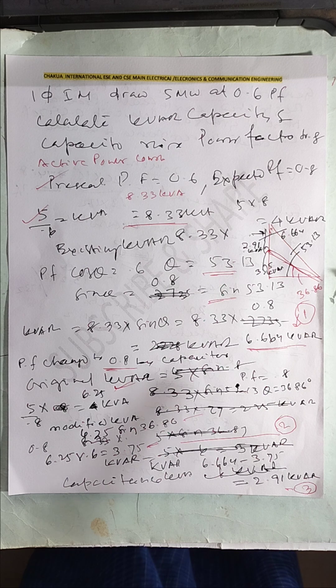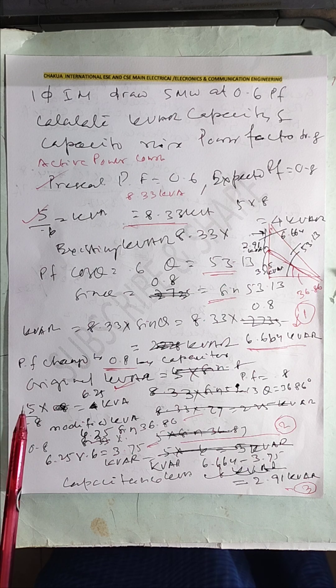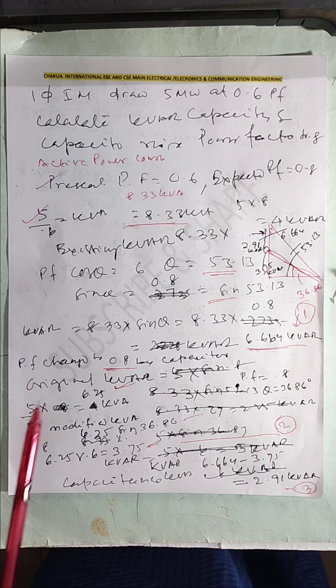First, for the 5 kW at 0.6 power factor, it is 8.33 kVA. The angle is 0.6, angle 53 degrees. The sine theta is 0.8, so the kVAR in the first case is 6.664 kVAR.